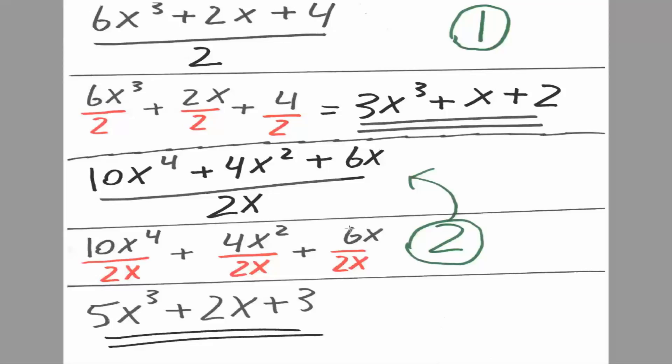6x divided by 2x. 6 divided by 2 is 3. x divided by x is 1. So 3 times 1. So simply 3. And this right here would be the final answer.